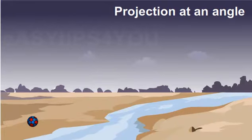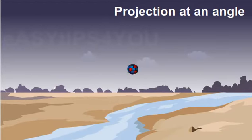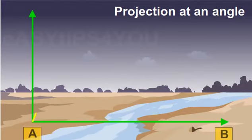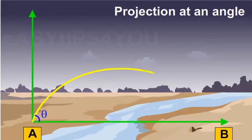Projection at an angle, i.e., oblique projection. Consider a body which is projected at an angle with the horizontal. Let u be the initial velocity of the projectile and θ be the angle of projection.